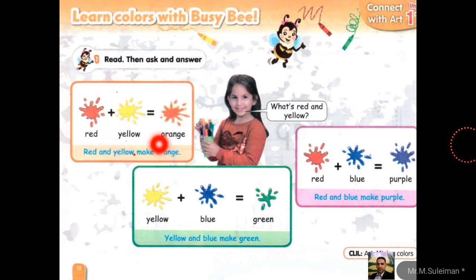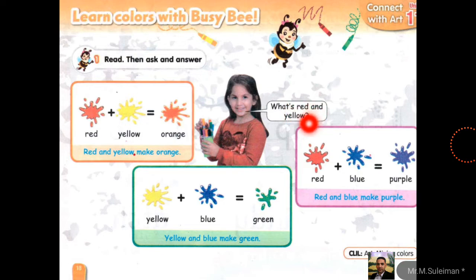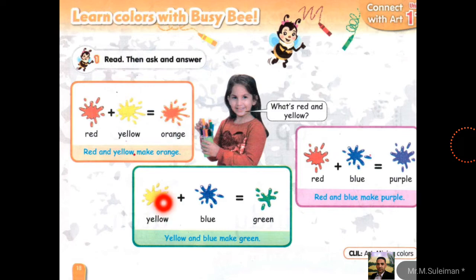Look at page B. Red plus yellow — you have a travel window. Red and yellow make orange. Red plus blue equals purple. Excellent! Yellow plus blue equals green.